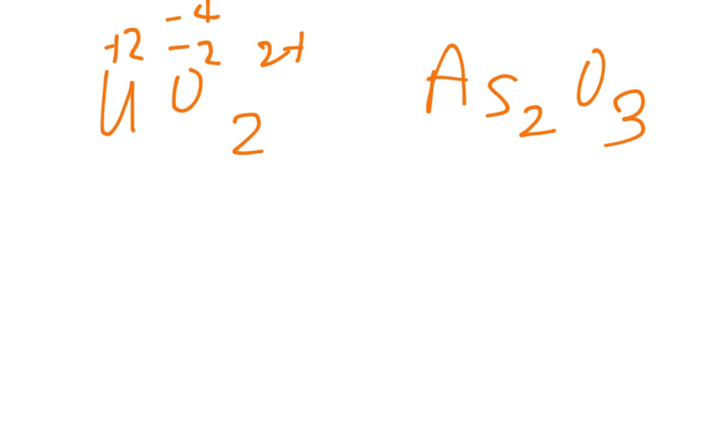68, we did this last year, and it's just a review this year. O2, this is going to be 2- for each oxygen, so 4- overall. It has a 2+ charge, so this should be a +2. As2O3, we know that oxygen is -2, -6. Negative 6, I would write that up there, but it's not letting me. So this has to be a +6, positive 3, because I have two of them.